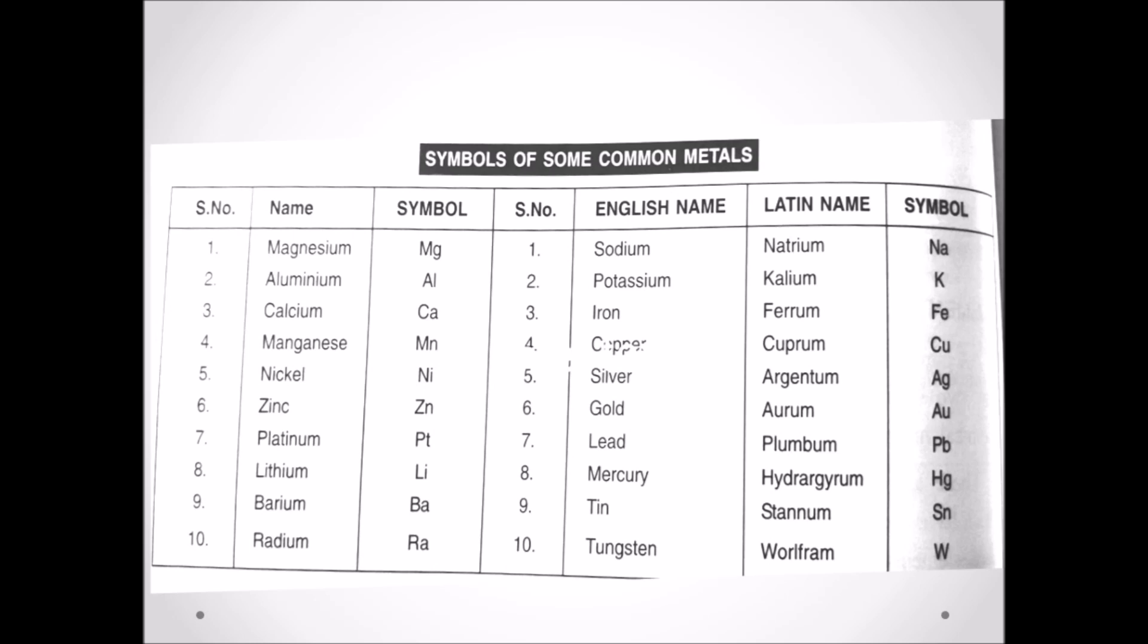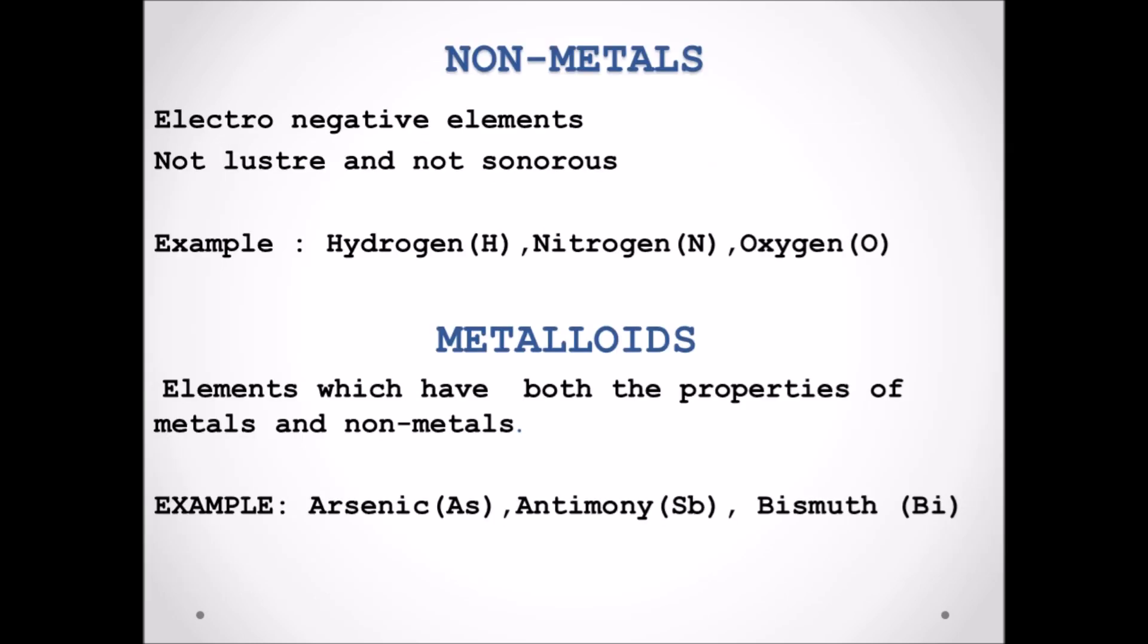Non-metals are mostly gas, like hydrogen, nitrogen, etc. Only a few of them are solid state. They are not sonorous nor have luster. Metalloids are elements which have both the properties of metals and non-metals.